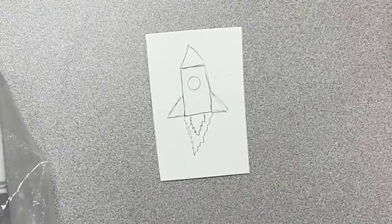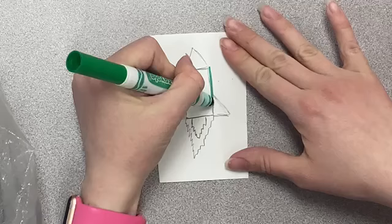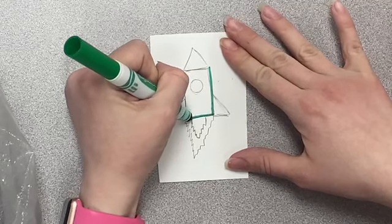Using your bag of markers, you're going to trace like you would with a sharpie, but you're using the colors you want your rocket ship to be.